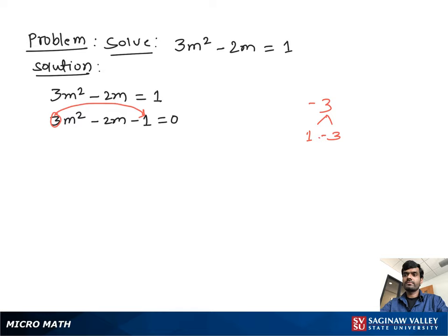Now we find a pair of numbers which when multiplied give us negative 3 and when added give us negative 2. That number is 1 and negative 3.